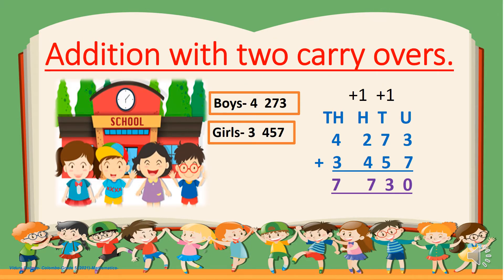Now we are going to add with 2 carryovers — that means in 2 places, you have to carry over to the next place value. In this question it comes in a different way. Here you have been given a small picture. This is a school. In this school there are 4,273 boys and 3,457 girls. You have to find the total number of students in this school. For that, you need to add these two numbers — number of boys and number of girls together. Since these are 4-digit numbers, again we have 4 place values: Units, Tens, Hundreds and Thousands. Let's write these two numbers one below the other: 4,273 and 3,457.